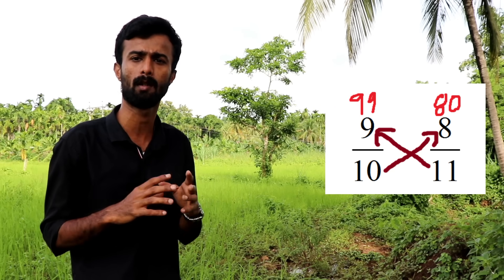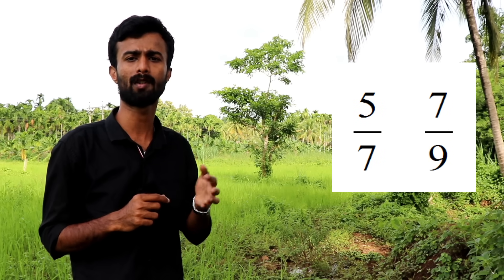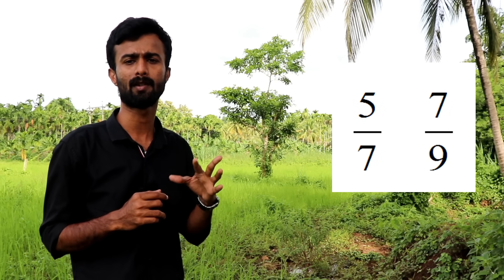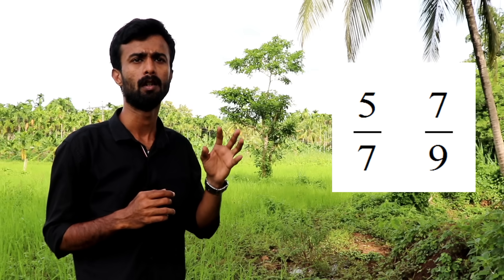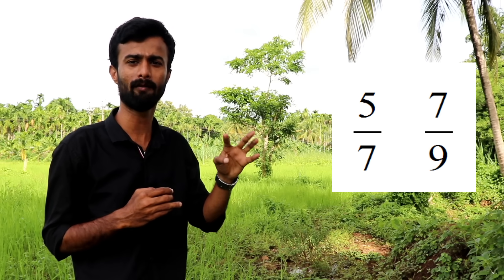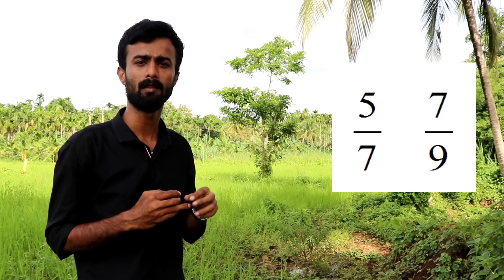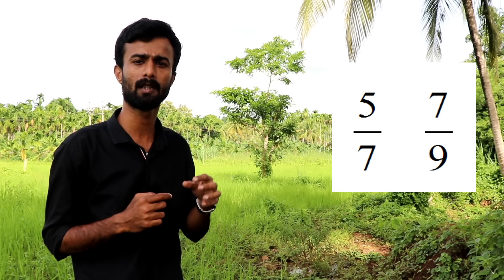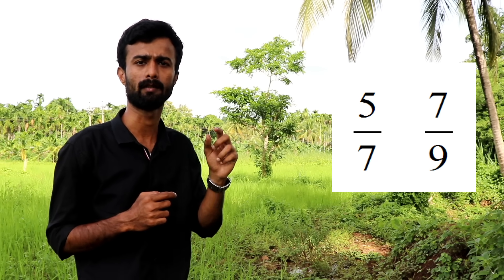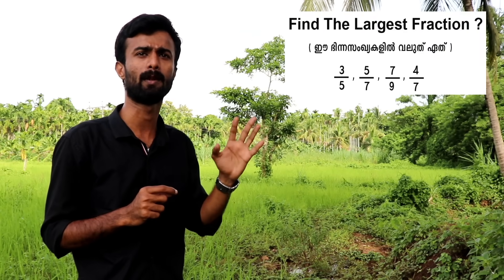Now we answer step by step. For 5/7 and 7/9, cross multiply: 5×9 = 45 and 7×7 = 49. So 45 is from 5/7, meaning 5/7 is the smaller number. The options for question number 1 are 3/5, 5/7, 7/9, and 4/7.